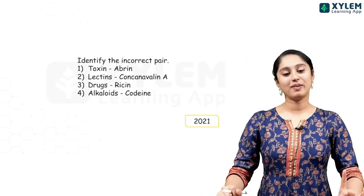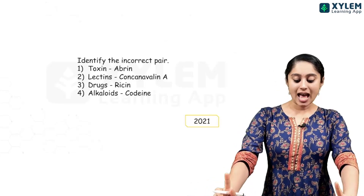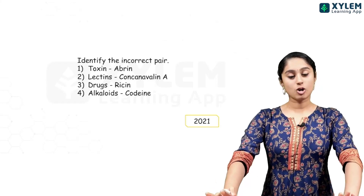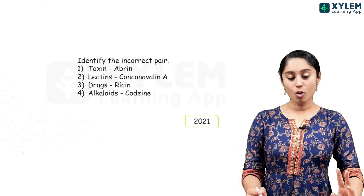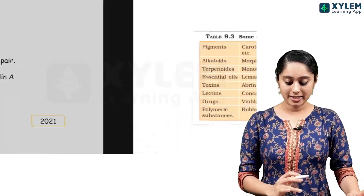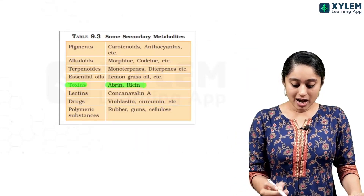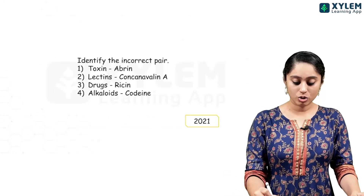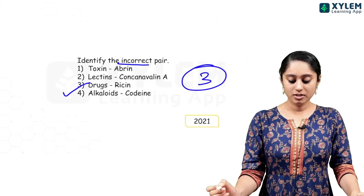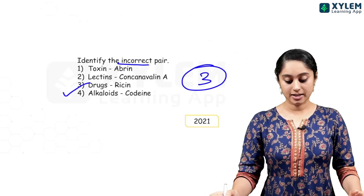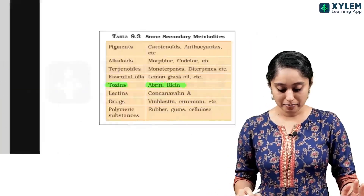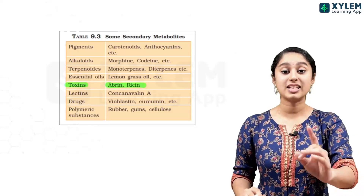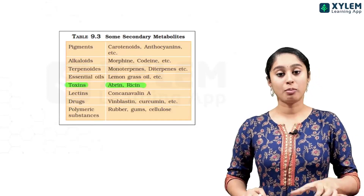Identify the incorrect pair: toxin is abrin, lectin is concavalin, drug is ricin, and alkaloid is codeine. You know that ricin and abrin are toxins — so giving ricin as a drug is incorrect. The incorrect pair will be option 3.